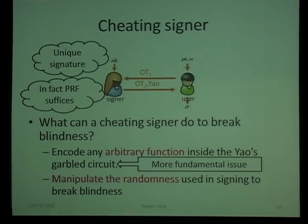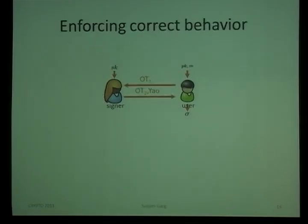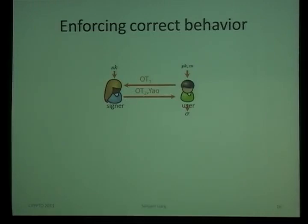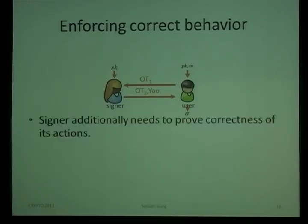The first issue — that Yao's garbled circuit construction only provides semi-honest security — is a more fundamental problem. We need a way to enforce that the signer cannot cheat. What we want is that the signer's second message, which is the response to the OT messages and the garbled circuit, is actually generated using the correct algorithm following the correct secret key. The signer additionally needs to prove the correctness of the messages sent.